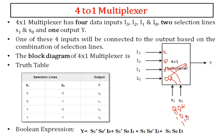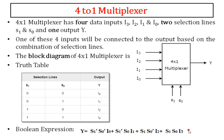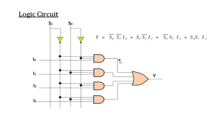This is what happens in the 4-to-1 multiplexer. The output Y is derived as: S0-bar·S1-bar·I0 + S0·S1-bar·I1 + S0-bar·S1·I2 + S0·S1·I3. This is the Boolean expression, and this is the logic circuit for the 4-to-1 multiplexer.